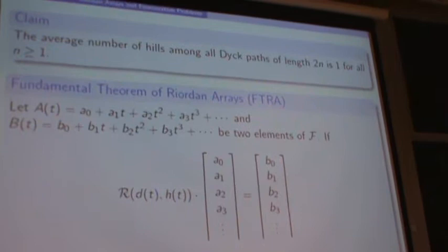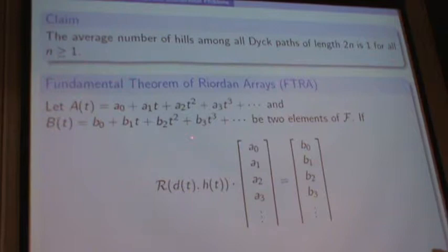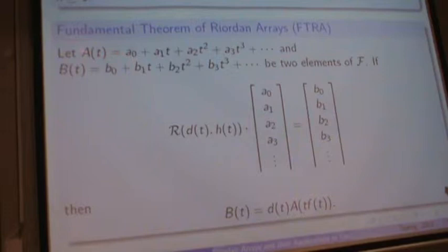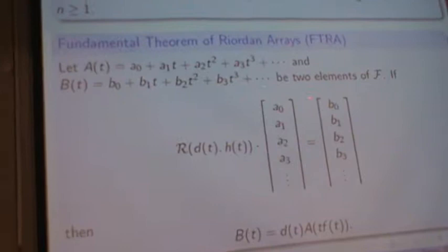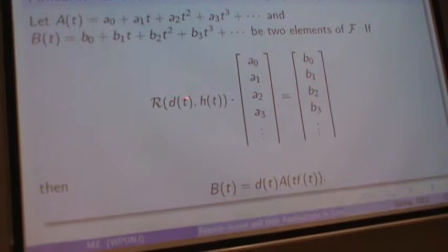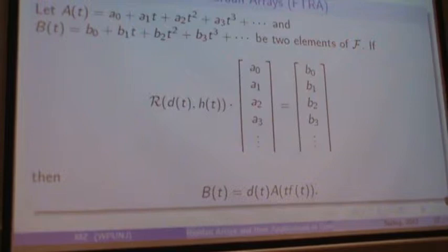You consider two generating functions A and B, or two formal power series A and B. You take any Riordan array and multiply it by the entries of the formal power series A, and set that equal to the entries of the formal power series B. Lou Shapiro showed that B of T is always related to the generators of the Riordan array and this particular formal power series by a simple computational rearrangement of terms.